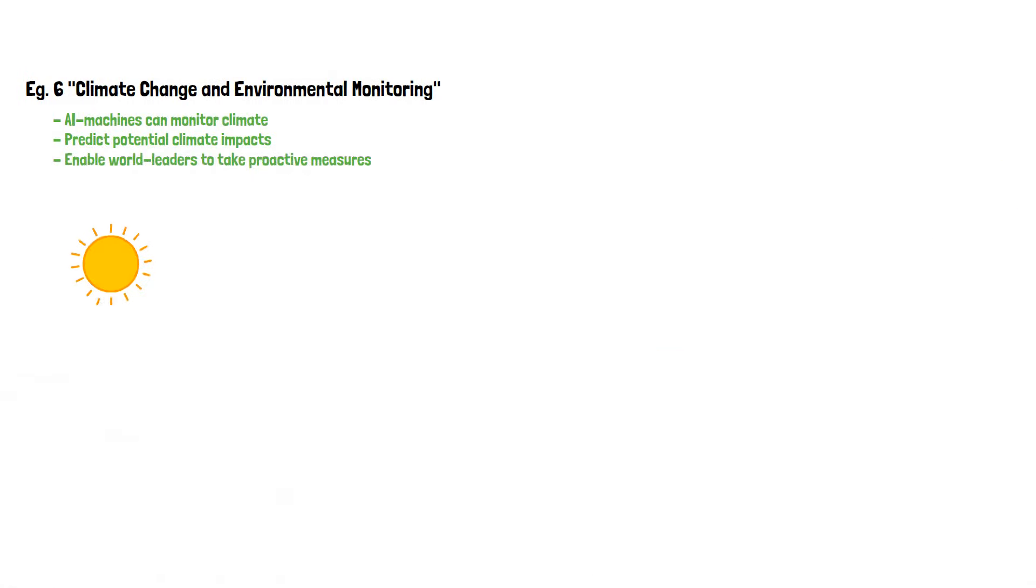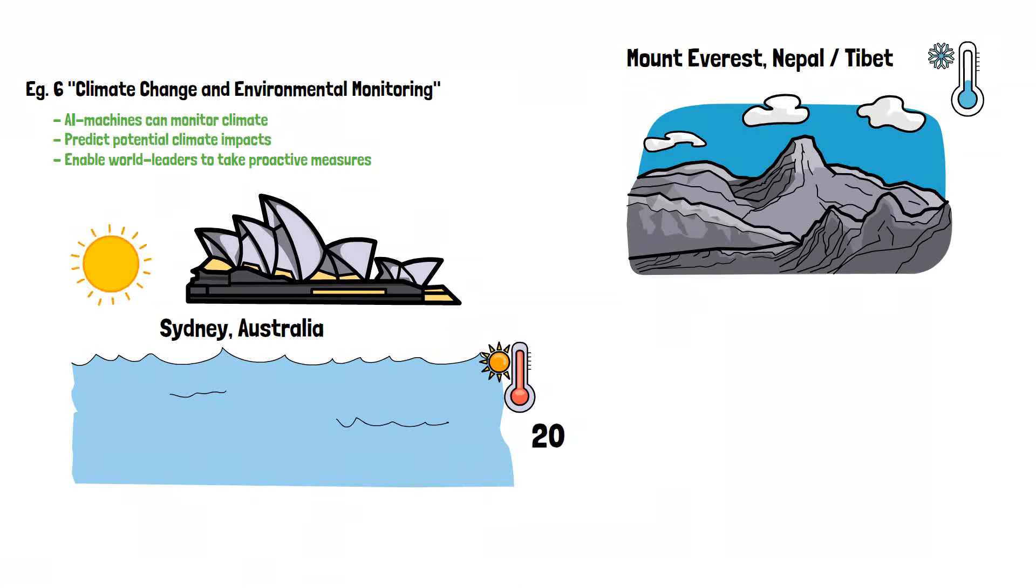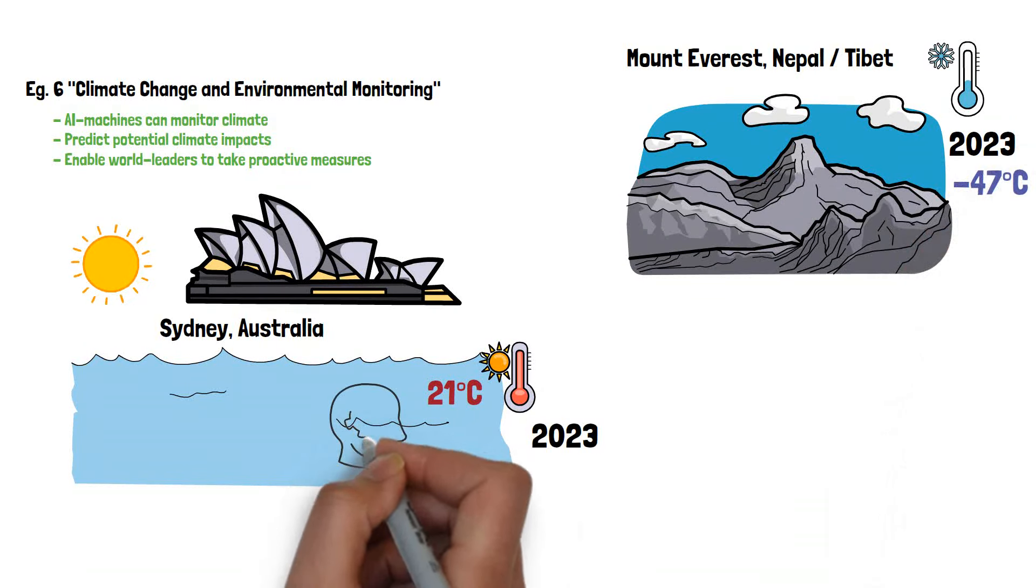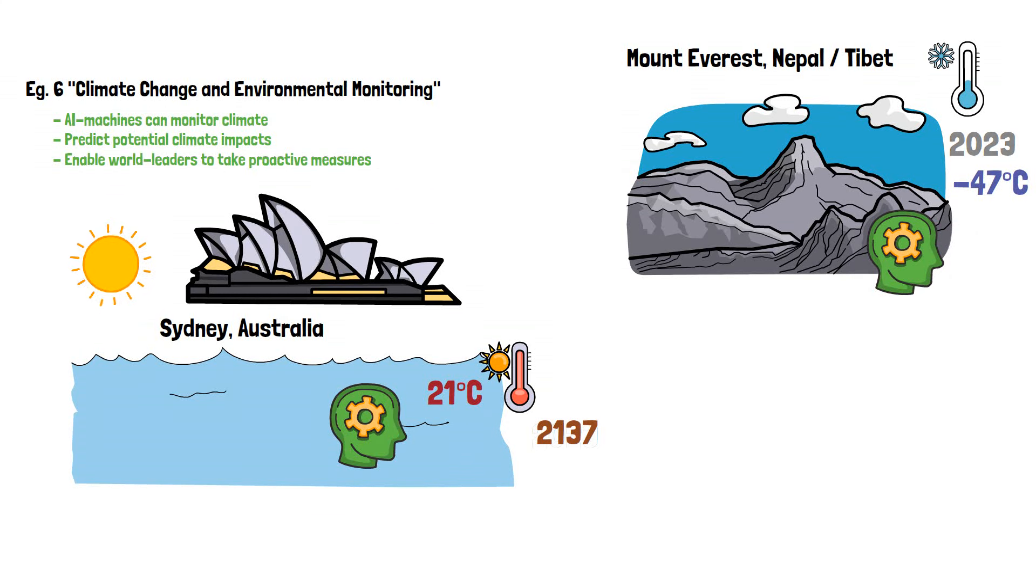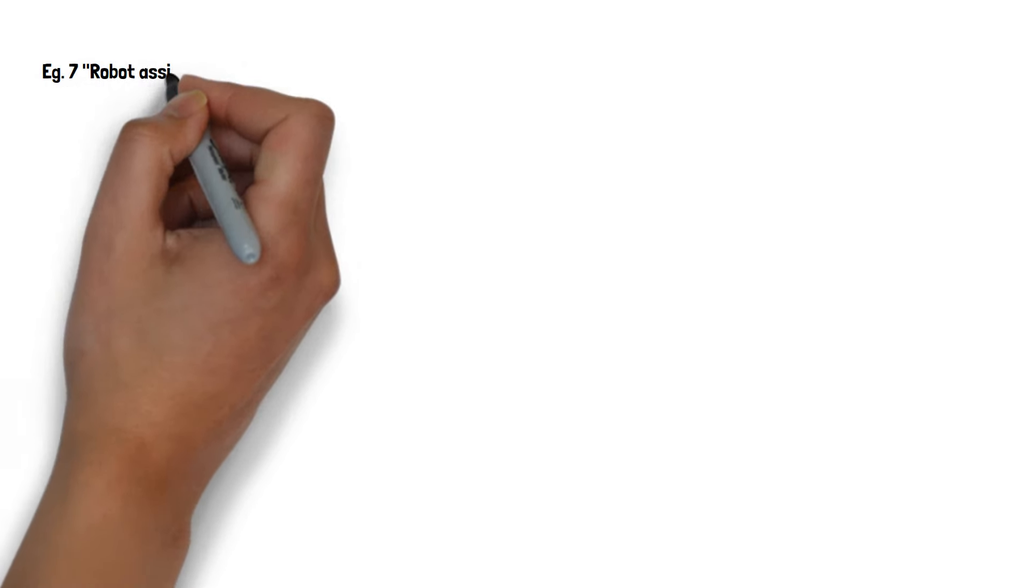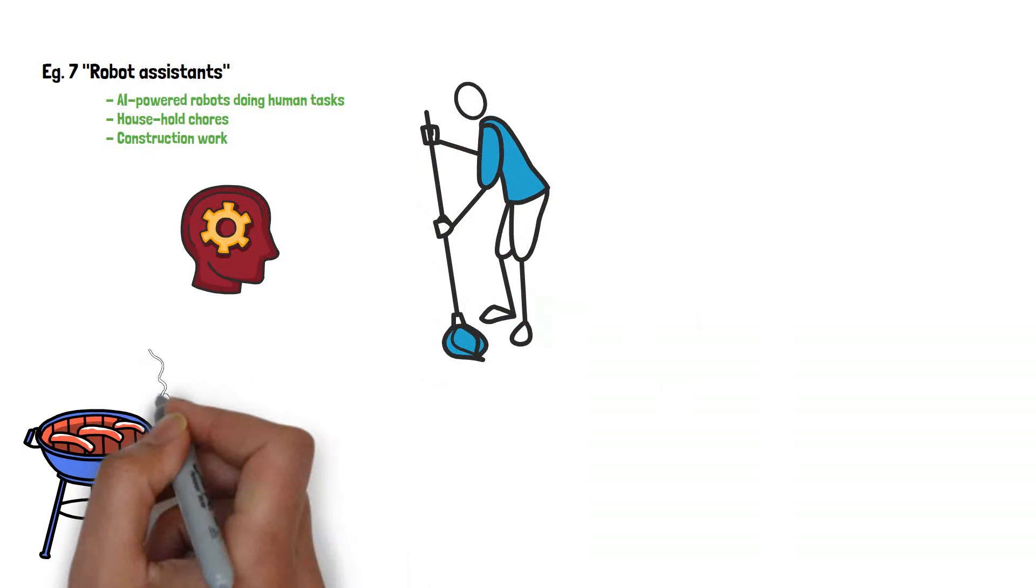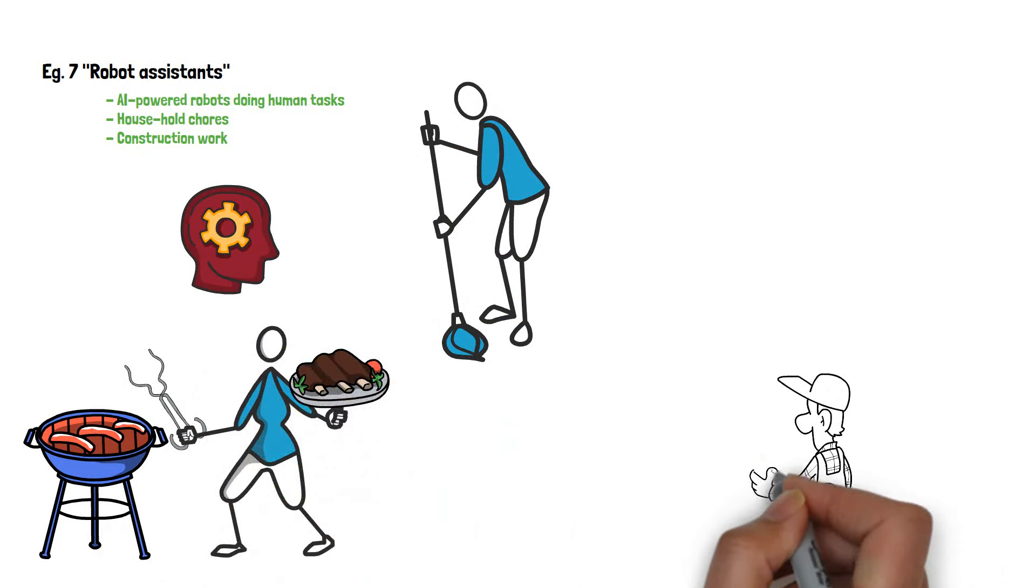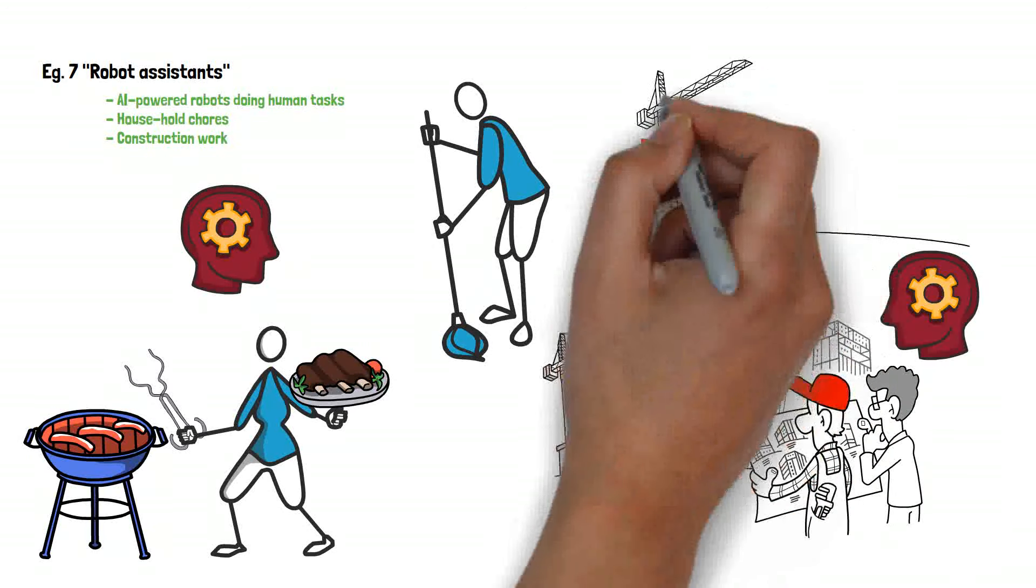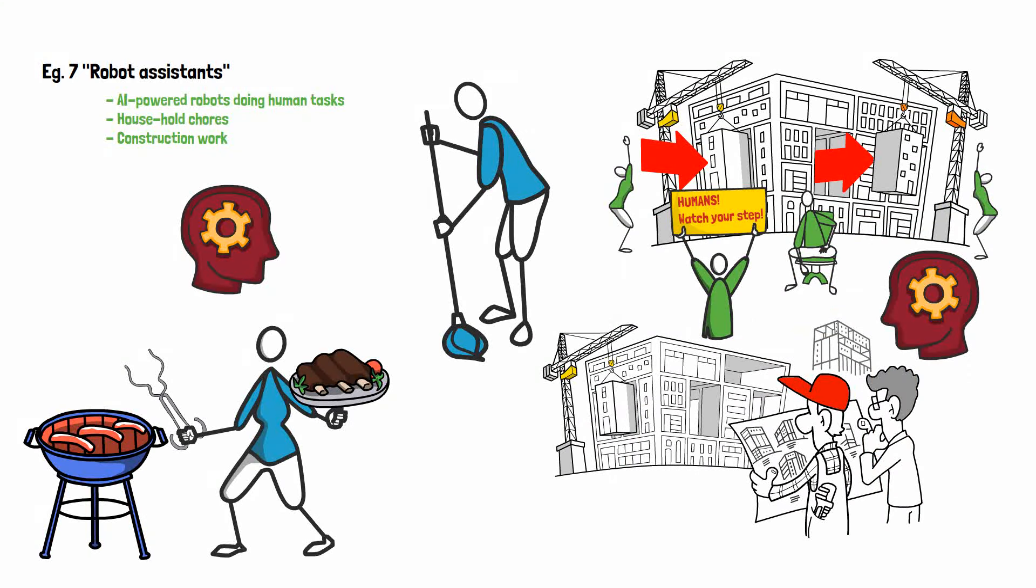A possible example is climate change and environmental monitoring. AI could be used to monitor and predict climate change impacts, enabling governments and organizations to take proactive measures to mitigate its effects. One example is robot assistance. AI-powered robots could assist humans in various tasks, from household chores to industrial and construction work, increasing efficiency and safety.